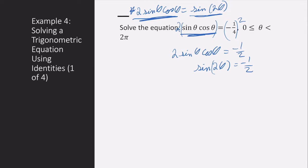But remember that our argument here is two theta. So we need to find a general formula that gives the solutions to sine of two theta is negative one-half over the interval from zero to two pi.